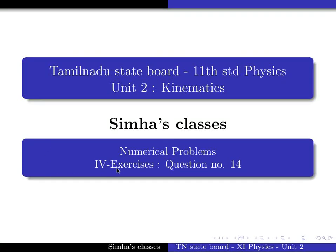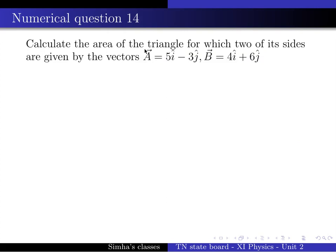Unit number 2, 4th exercise, numerical problem, question number 14. Calculate the area of the triangle for which 2 of its sides are given by the vectors: a is equal to 5i minus 3j, b is equal to 4i plus 6j. So, a vector is equal to 5i minus 3j plus 0k, and b vector is equal to 4i plus 6j plus 0k.